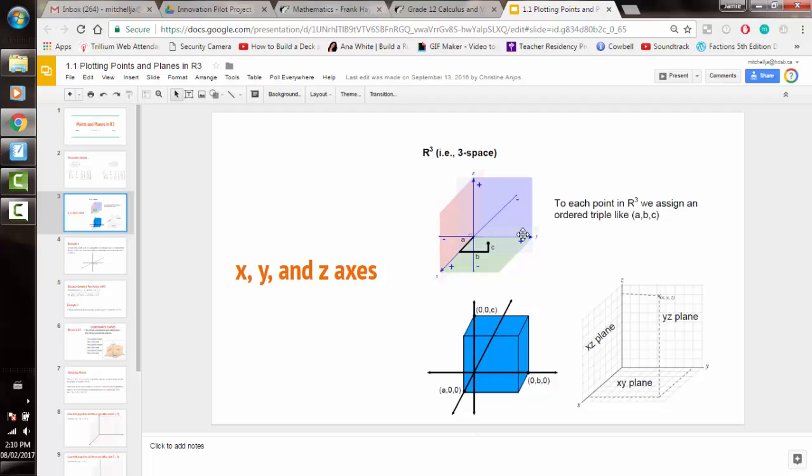Again, positive going to the right, negative going to the left. And then up and down is our z-axis, which is positive going up, negative going down.